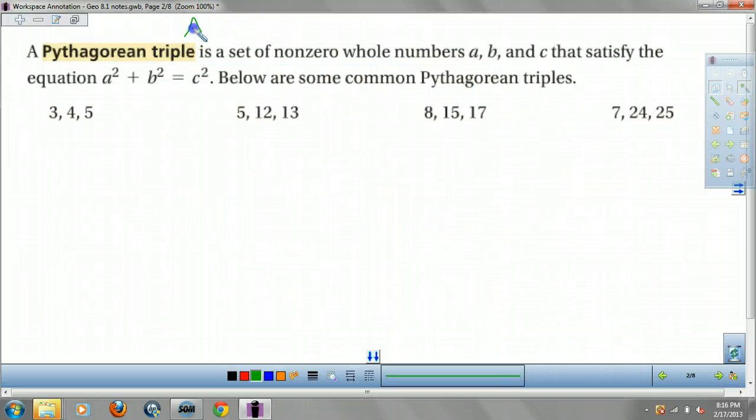This is something that will come up on the ACT, guys. This will save you a lot of time. The Pythagorean triple is a set of non-zero whole numbers A, B, and C that satisfy A squared plus B squared equals C squared. Here's some of the common ones. 3, 4, 5 is a huge one that they use all the time in the ACT.